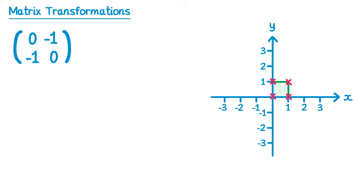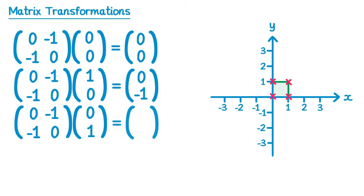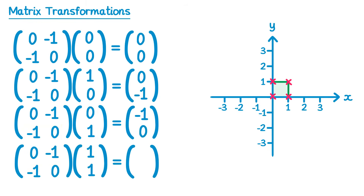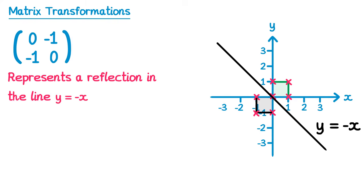Now for the matrix [0 -1; -1 0] — the same but with negatives. Point (0,0) stays at (0,0). Point (1,0) goes to (0,-1). Point (0,1) goes to (-1,0). Point (1,1) moves to (-1,-1). So (0,0) stayed but the other three points moved — they've all been reflected in the line y equals negative x. So this matrix represents a reflection in the line y equals negative x.